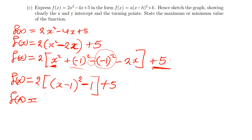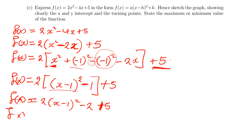Multiplying through the brackets: 2 times (x − 1)² stays as 2(x − 1)², and 2 times negative 1 gives negative 2. Adding negative 2 and positive 5 gives positive 3. So f(x) = 2(x − 1)² + 3. We have successfully expressed the equation in vertex form.